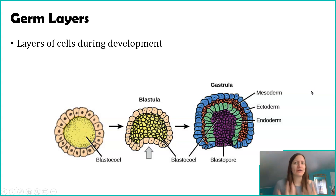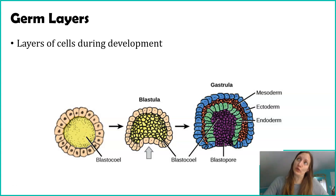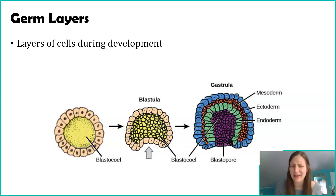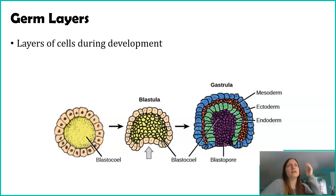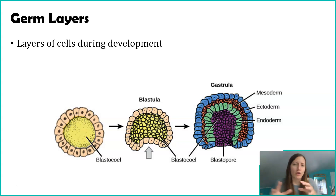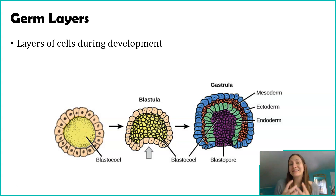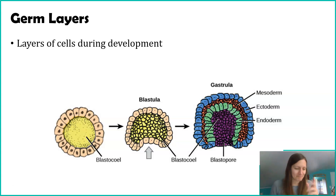So what a germ layer is — I'm trying to make this as simple as possible — think about yourself as an embryo, but really any animal, not just humans. When you are only a couple hundred cells, your cells are turning on different series of genes. And some of those genes help to assign the cells of what that cell is going to make in life. Bam — germ layer.